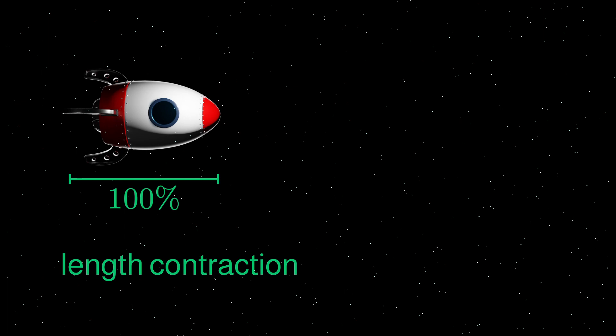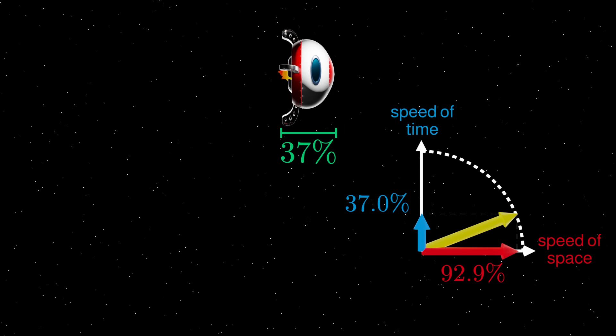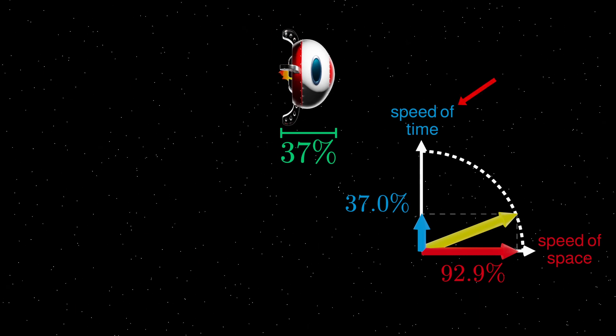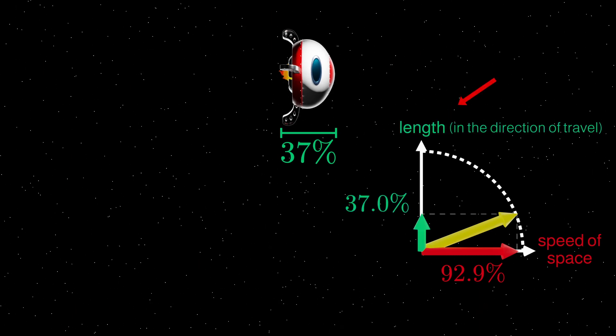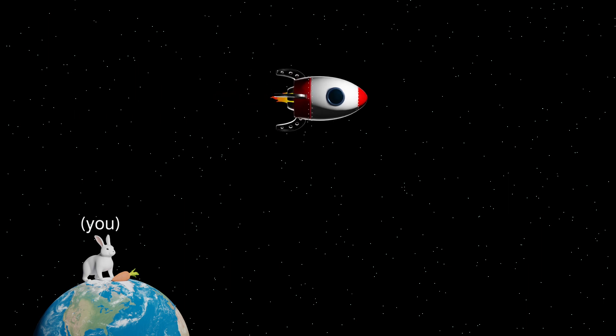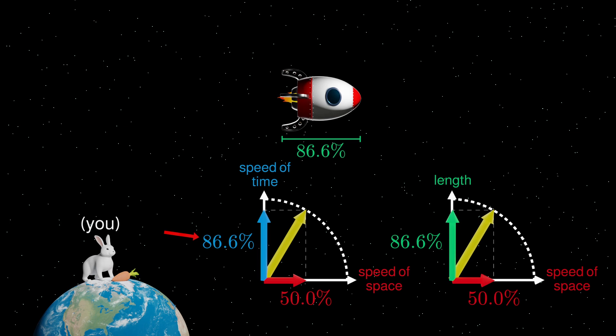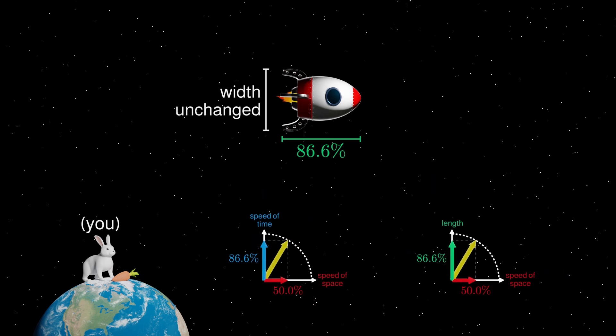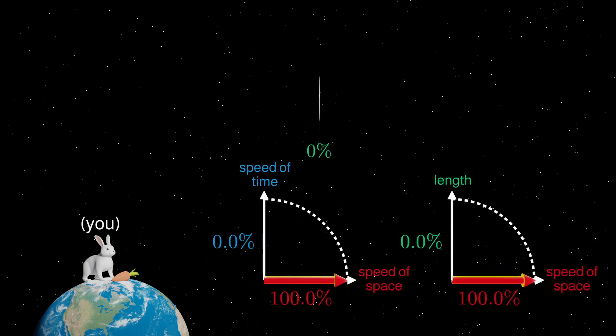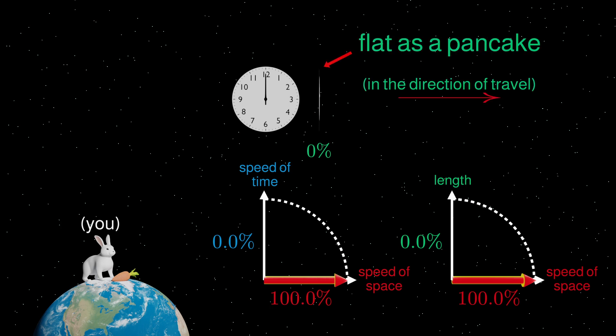Next, length contraction acts in a similar way. Fast-moving objects are squished in the direction of travel, and once again, you can use that circle speedometer thing, but this time replaced speed of time with length in the direction of travel. So now, when an object is not moving relative to the observer, its length in the direction of travel is at 100%, but speeded up to 50% of the speed of light, and its length is 86.6% long, as well as having its time speed also be 86.6%. Keep in mind, the width of the object is never changed. And at 100% speed, time is completely frozen, and the object becomes flat as a pancake in the direction of travel.